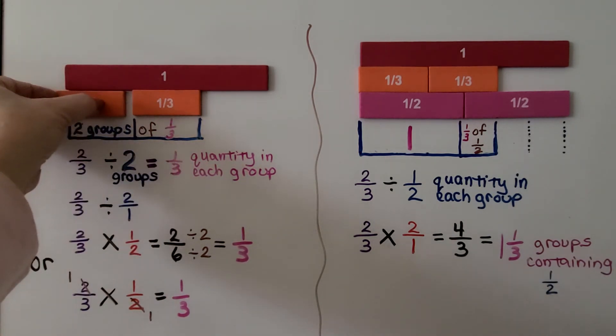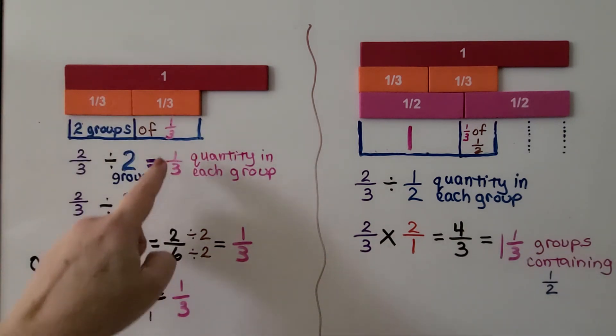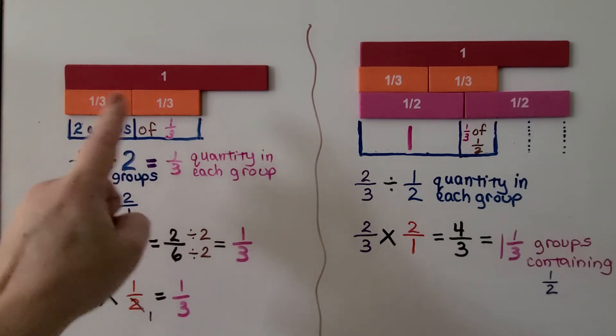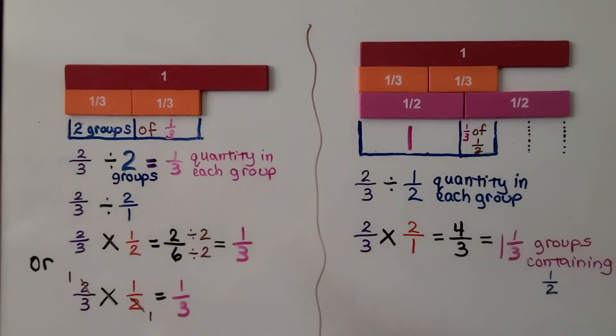The quantity in each group is ⅓. We have ⅔ divided by 2/1. We flip it to its reciprocal and multiply: 2×1 is 2, 3×2 is 6. We can divide by the GCF of 2: 2÷2 is 1, 6÷2 is 3. It's ⅓, telling us there's ⅓ in each of these two groups.